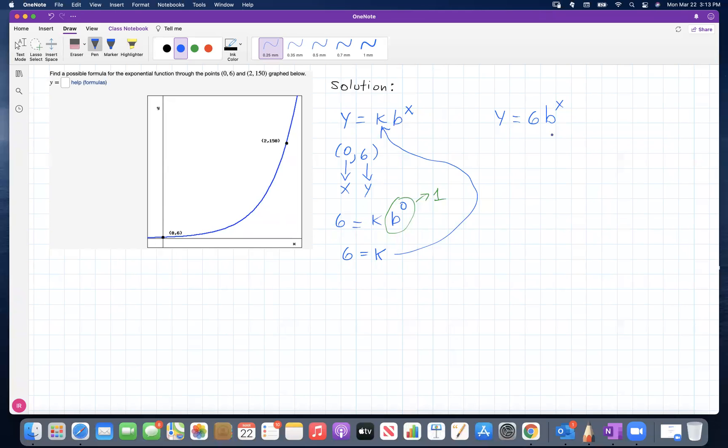Now, similarly, we can find the value of b by using this second point (2,150). We know this point belongs to the graph, so the coordinates x and y must satisfy this equation.